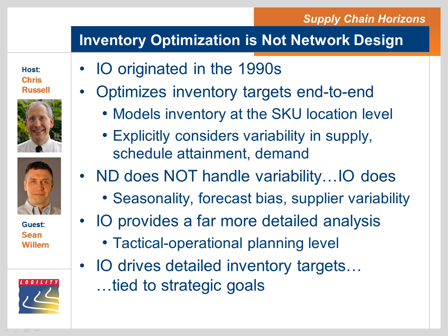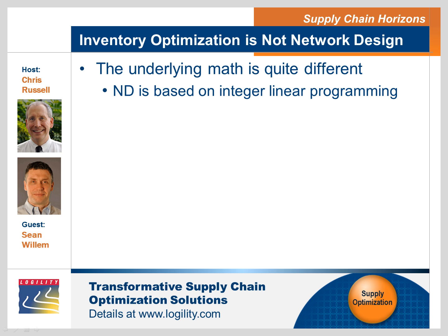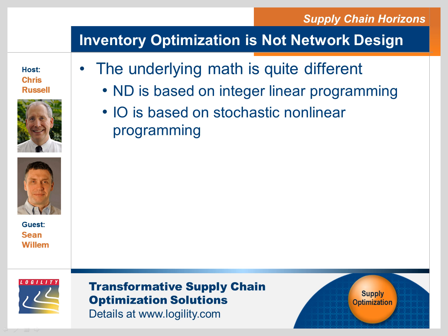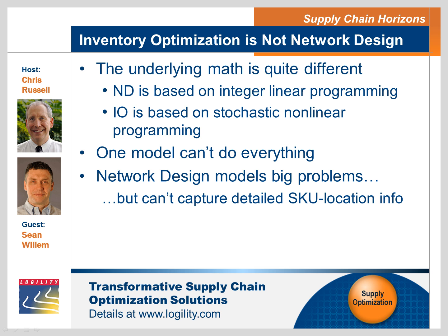Is there a basic difference in the mathematical approach? The underlying math is quite different. In network design, they rely on integer linear programming — a well-established area of operations research modeling. When we look at inventory optimization, we're looking at stochastic nonlinear programming — a different class of models. This is why one model can't do everything. Network design can model very big problems of turning on and off facilities using integer constraints, but it can't capture the detailed SKU-location information required in these nonlinear stochastic solvers.